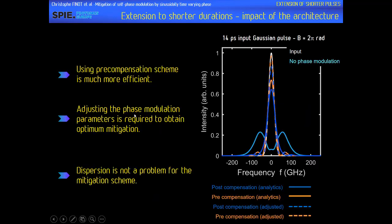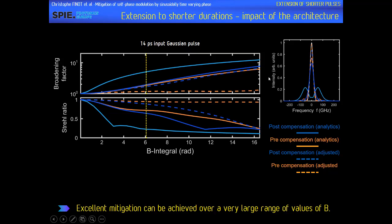We can see on the spectrum that according to the mitigation scheme used, we can achieve very strong improvements. Comparing the results for different values of the B integral, the best results are obtained when we make the mitigation prior to the nonlinear element with optimized parameters. It works very well over a very broad range of B integral values.